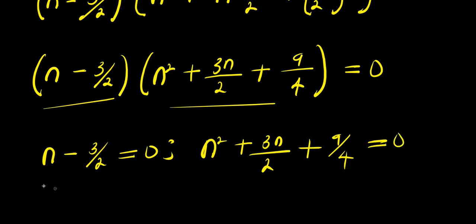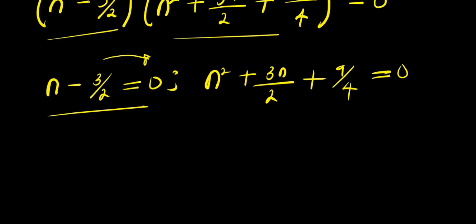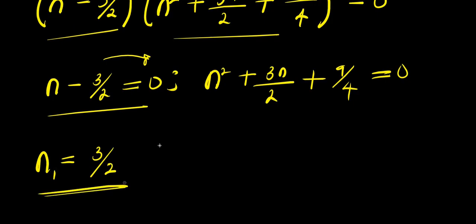Solving the first equation, n minus 3/2 equals 0, so n equals 3/2. That is our first solution, n₁.